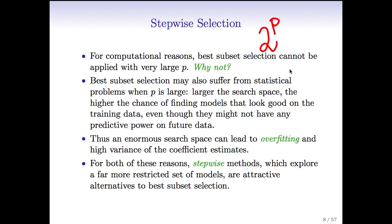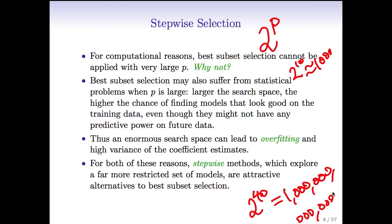Just to put this in perspective: 2 to the 10 is like 1,000. Fitting 1,000 models if you've got a decent computer is no problem. But 2 to the 40 is a really big number. So the idea is that when P is large, we're really not going to be able to do best subset selection — and 40 predictors isn't even large. I work on data where there's easily tens or hundreds of thousands of predictors.